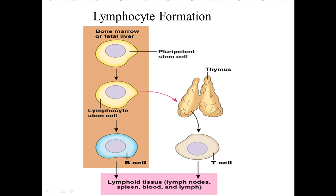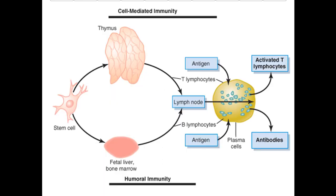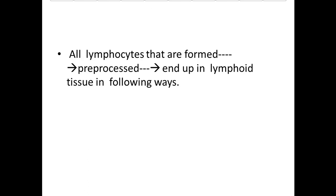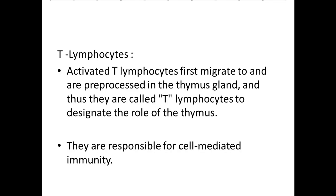Lymphocyte formation: lymphocyte stem cells from bone marrow or fetal liver are converted into T-cells in the thymus, and B-cells on the other pathway. When there is exposure to an antigen, T-lymphocytes produce cell-mediated immunity, while on the B-cell side there is humoral immunity with production of antibodies in response to the antigen.